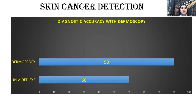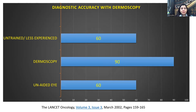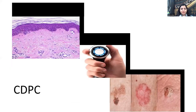Whenever you perform dermoscopy, your diagnostic accuracy jumps from 60% to 90% in certain lesions. However, if you are untrained or less experienced, the diagnostic accuracy remains around 60% and does not reach 90%. That level is only achievable when you are properly trained in dermoscopy.